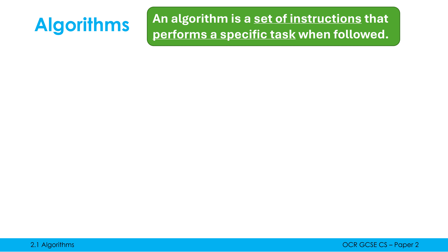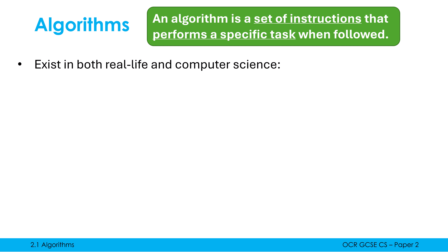An algorithm is a set of instructions that performs a specific task when followed. You can have a couple of variations of this definition, but the two bits underlined are the two critical bits. 'Set of steps' is fine, saying 'it solves a problem' is fine, but that's the essence. We are trying to solve problems using instructions, and these exist everywhere, both in real life and, of course, in computer science.